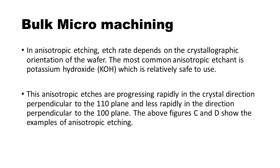In anisotropic etching, the etch rate depends on the crystallographic orientation of the wafer. The most common anisotropic etchant is potassium hydroxide, which is relatively safe to use. Anisotropic etches progress rapidly in the crystal direction perpendicular to the 110 plane, and less rapidly in the direction perpendicular to the 100 plane. The figures show examples of anisotropic etching.